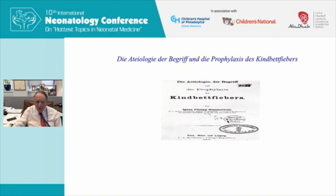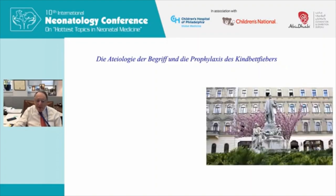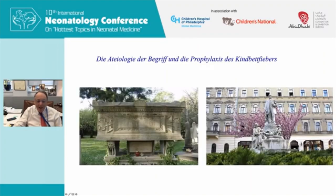Semmelweis wrote a famous monograph called 'The Etiology and Understanding and Prevention of Childbed Fever.' Unfortunately, he was rebuffed across the medical community. He moved back to Budapest, where people basically thought he was crazy. He had some psychological disorders and died at the age of 47 in an asylum — from a combination of trauma and infection. He was obviously a very significant individual in medical history, and today there is Semmelweis University in Budapest.